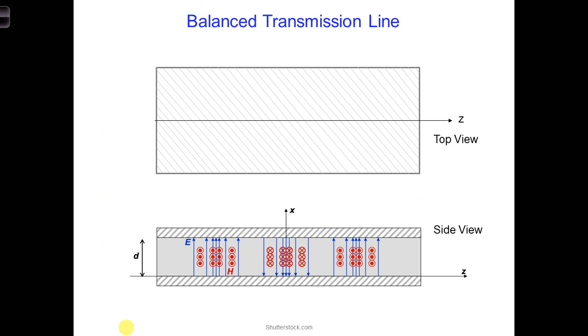Now in our case, we're not constrained to a circuit board. That is, there isn't really an advantage to us having one of the conductors be wider than the other. So we could use what's called a balanced transmission line, like the one shown here, where both the conductors have the same width.